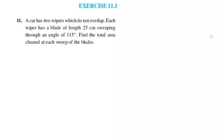Welcome to exercise 11.1, question number 11. A car has two wipers which do not overlap. Each wiper has a blade of length 25 cm, sweeping through an angle of 115 degrees.